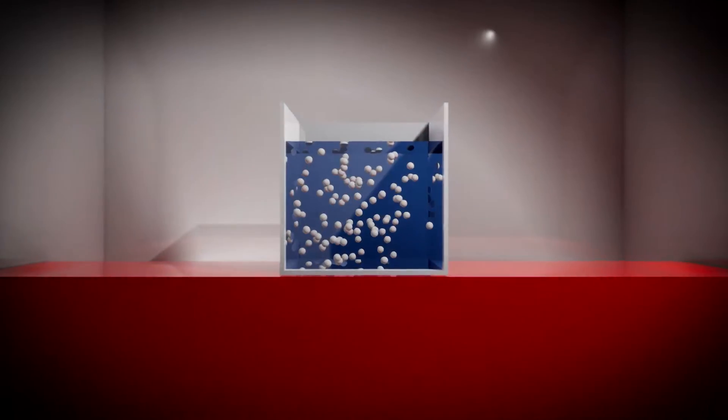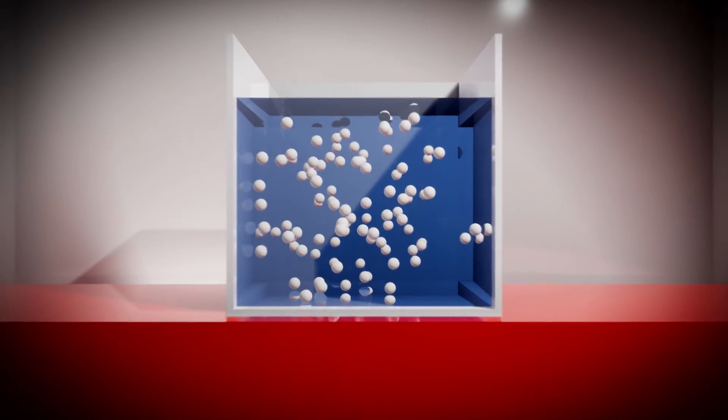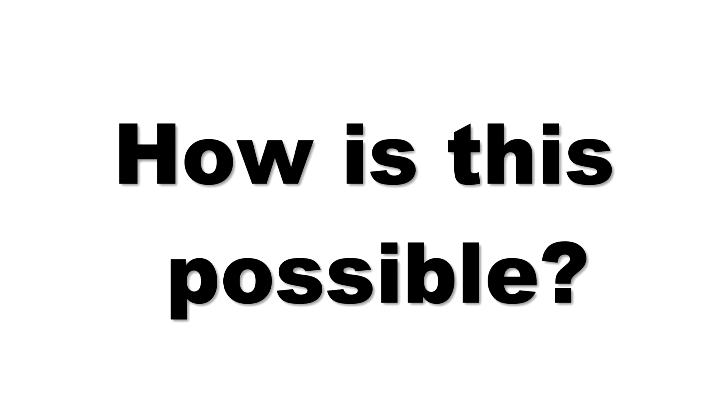Despite this, we know that molecules can diffuse into and out of cells. Motion with a defined direction. So how is this possible?